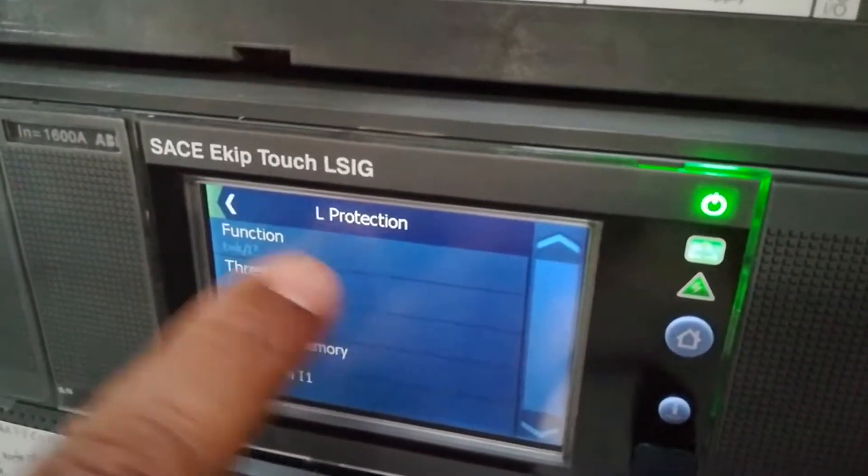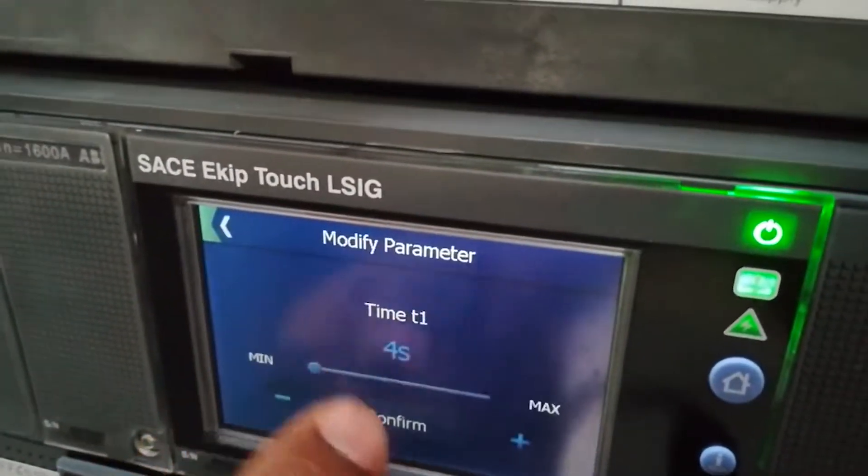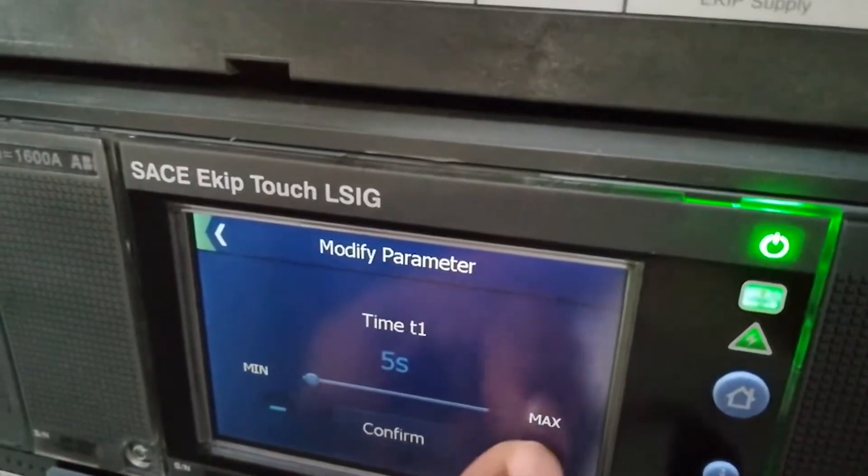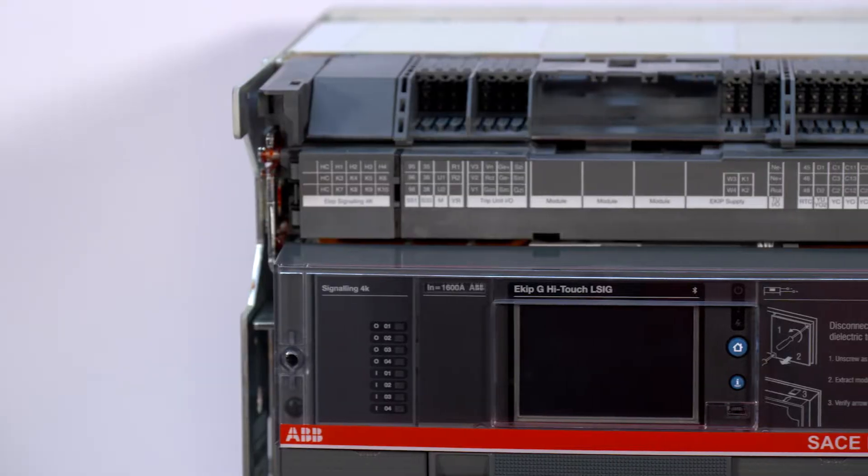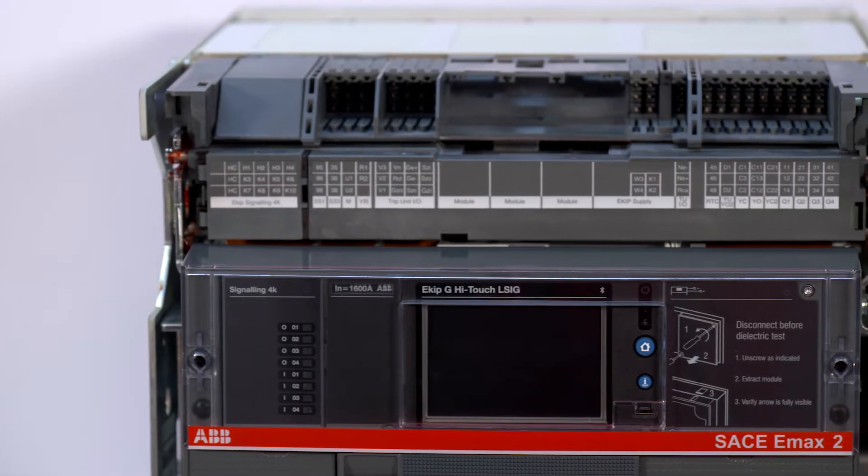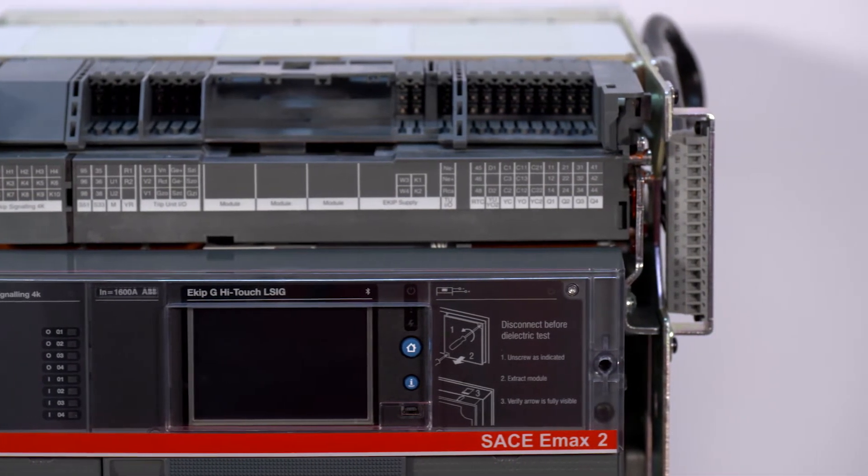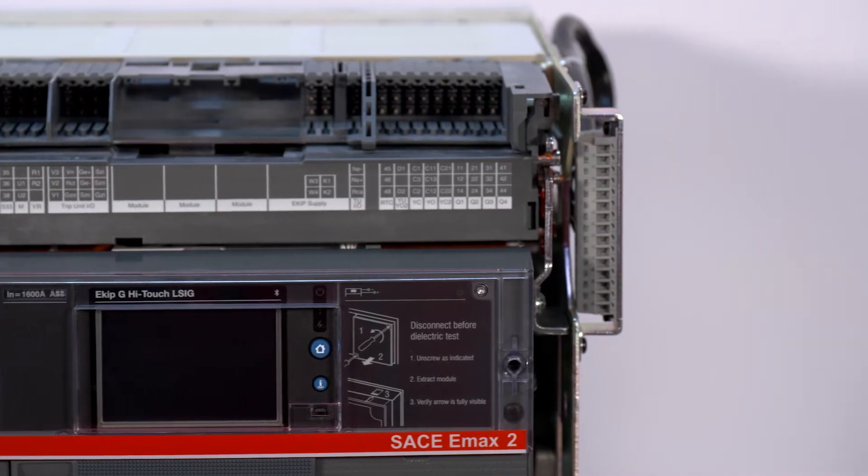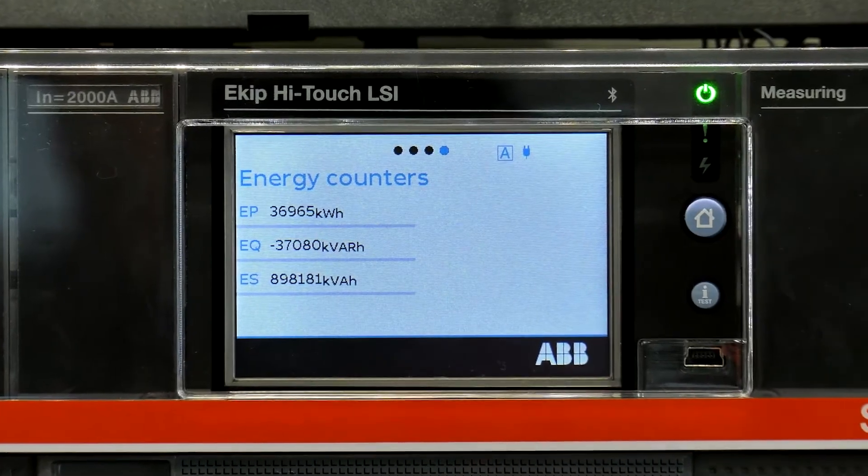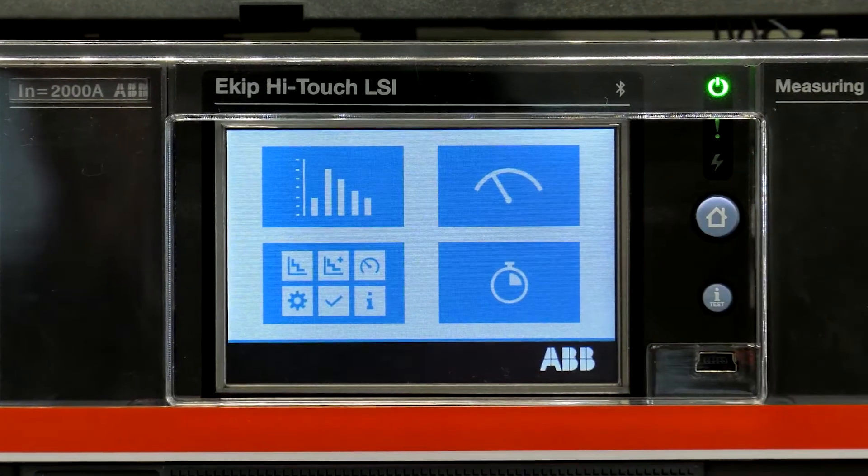Embedded functionalities allow you to customize your trip unit by selecting the set of protections, measurements and logics. E-KIP touch and high touch trip units use zone selective interlocking, dual setting protections and reduced energy let through to reduce arc flash energy without sacrificing selectivity settings.